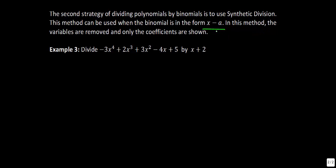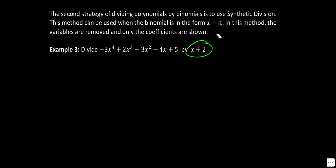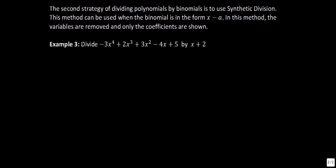You might wonder what that means. Well, x minus a means that we don't have a leading coefficient in front of the x. So if you ever had something like 2x plus 2, you could not use the synthetic division method. The only way it works is if the leading coefficient is just 1 — just x. The reason people like synthetic division is that it's usually a little bit easier and less time consuming.